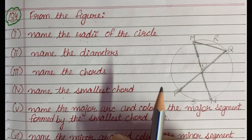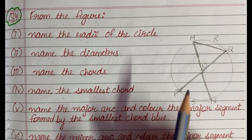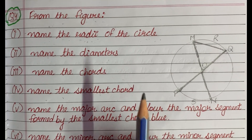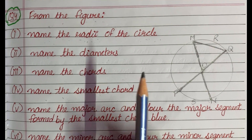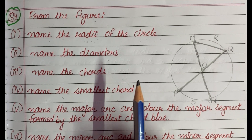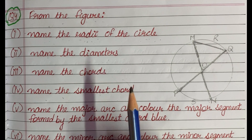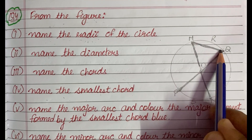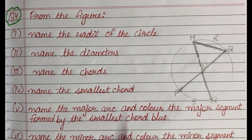The fourth point asks for the smallest chord. There are three chords in total and two of them are diameters, which are the longest chords. The remaining chord MQ is therefore the smallest chord.